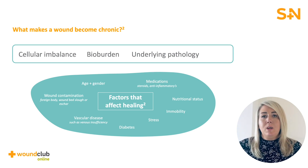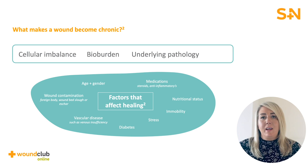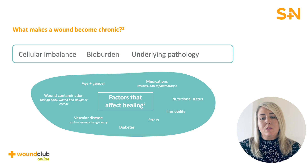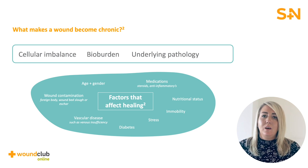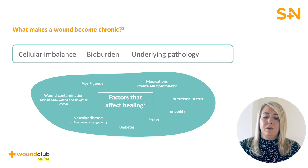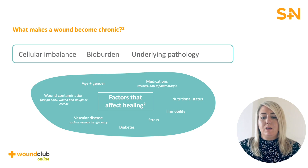Now we will consider what makes a wound become chronic. Often there are chemical imbalances, bioburden or underlying comorbidities to consider. The factors that can affect wound healing are age and gender, medication, wound contamination, presence of vascular disease or diabetes, nutritional status, immobility and stress.